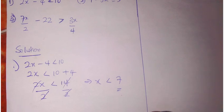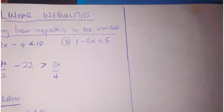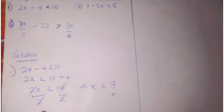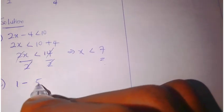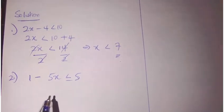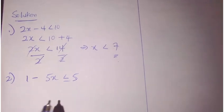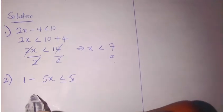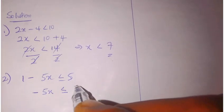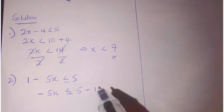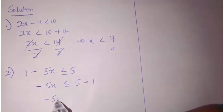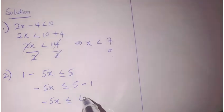For number 2 question, we have 1 minus 5x to be less than or equals to 5. Now, let's collect like terms. This becomes minus 5x to be less than or equals to 5 minus 1. This becomes minus 5x to be less than or equals to 4.